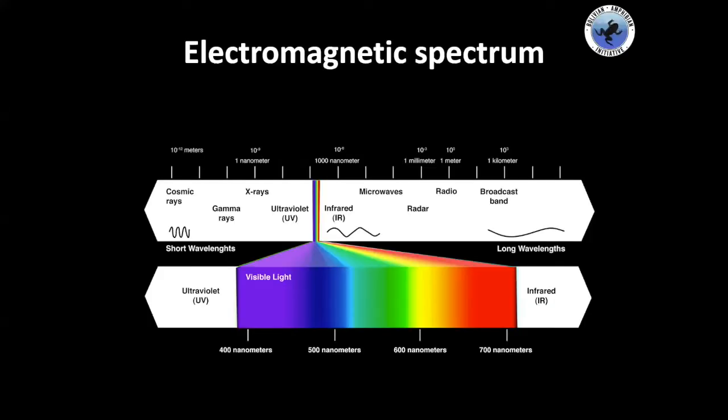Basically, you have the electromagnetic spectrum where you have ultraviolet light, which we are going to talk more about today. But you also have the visible light that we are able to see, and the infrared radiation that is responsible for warming things or for feeling heat in different ways.